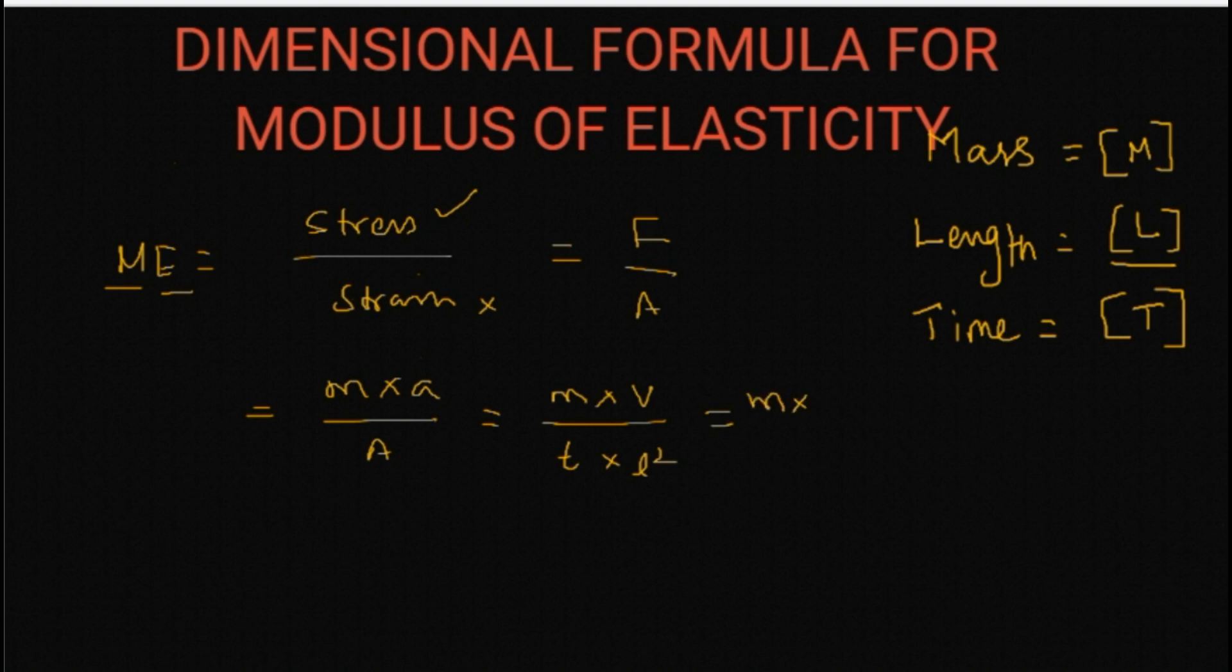Velocity can be written as displacement by time, or length by time, or length by time square into L square.